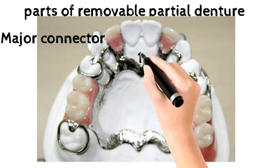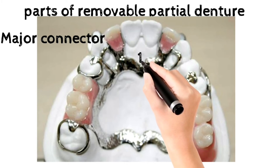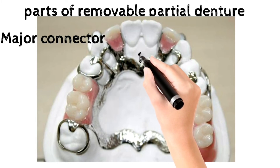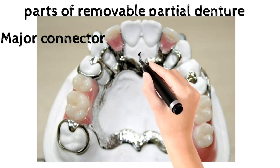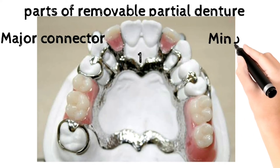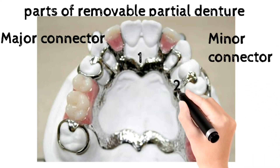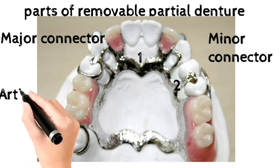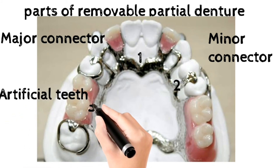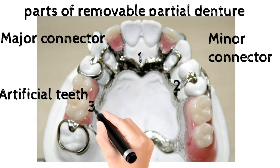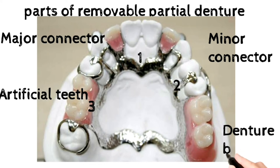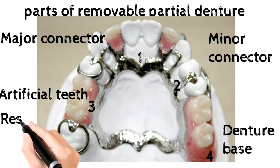Number 1 shows the Major Connector. Number 2 shows the Minor Connector. Number 3 shows the Artificial Teeth. Number 4 shows the Denture Base.